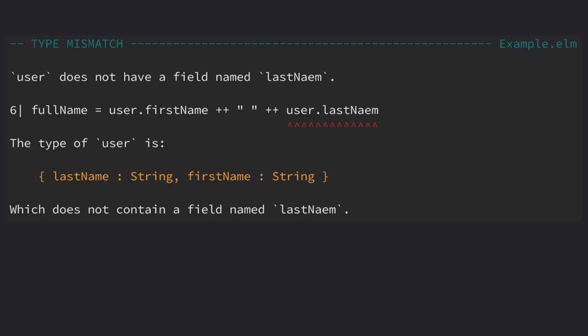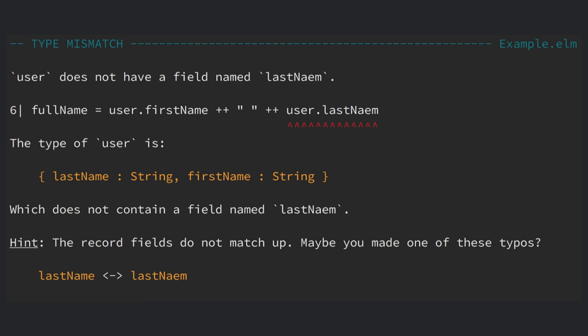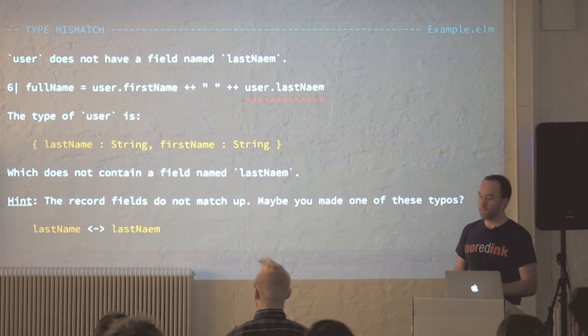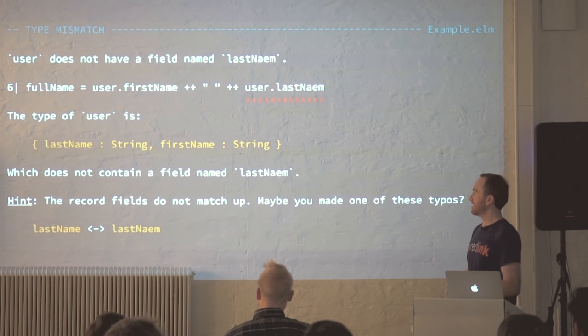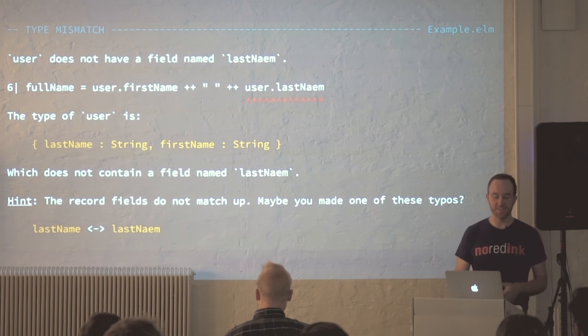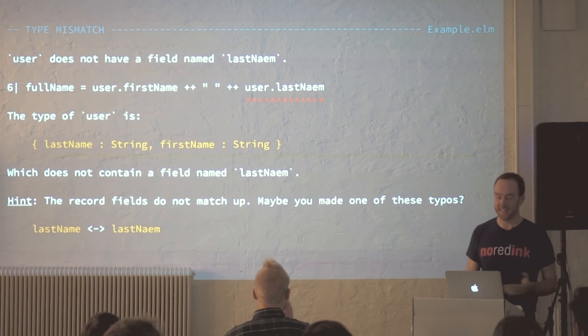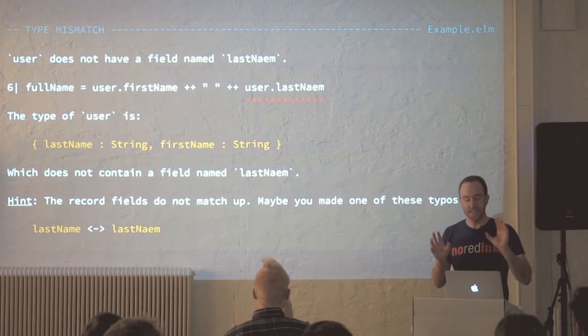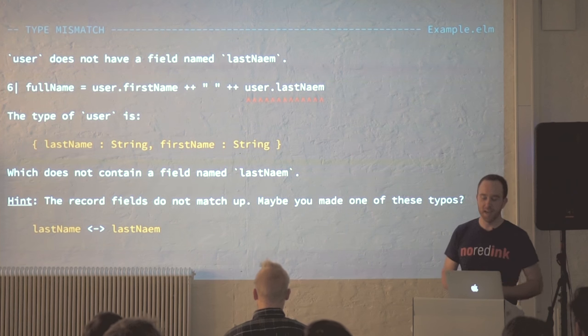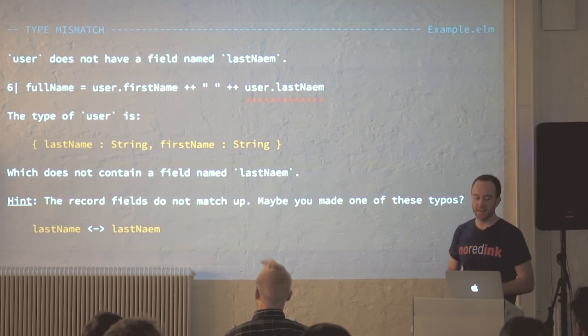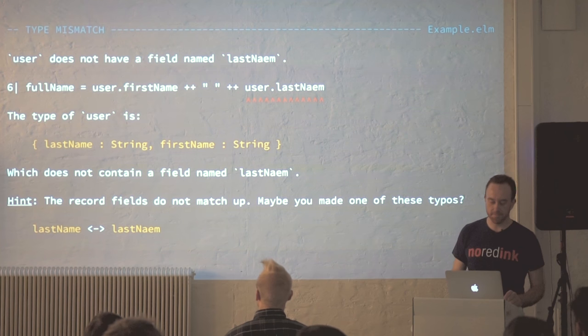It says: which does not contain a field called 'lastname'. Also, hint — the fields do not match up. Maybe you made one of these typos: 'lastname' and 'lastname'. When it gives you this much help, it's actually kind of difficult to imagine how someone might accidentally create a runtime exception. It is possible — you definitely can make runtime exceptions in Elm — but it's kind of hard to do it accidentally when you have this much help.